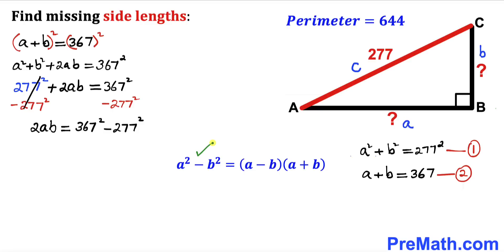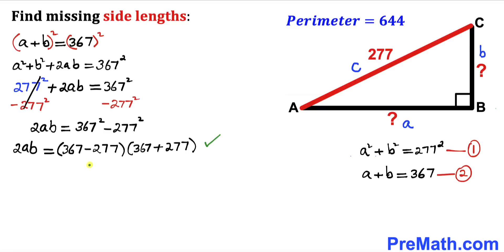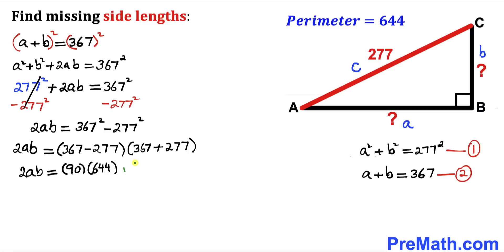Now let's recall the identity: a squared minus b squared equals a minus b times a plus b. We have the difference of two squares, so we can apply this identity. This becomes 367 minus 277 times 367 plus 277. The difference of these two numbers is 90 and the sum is 644. Now dividing both sides by 2, a times b turns out to be 28,980.